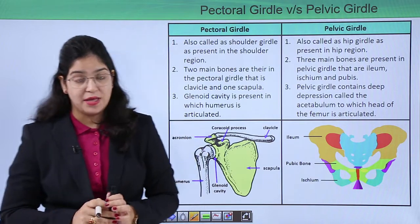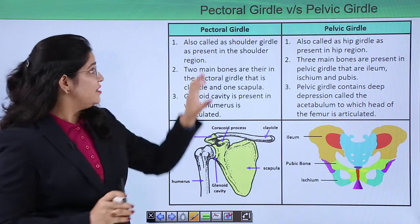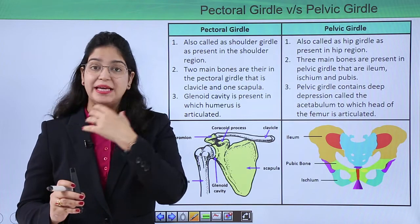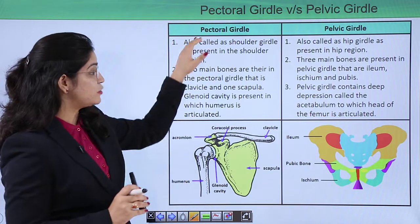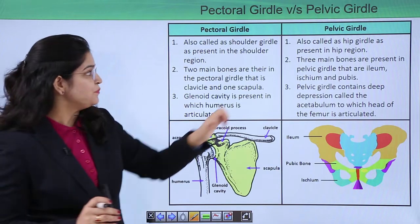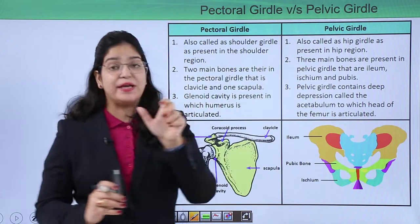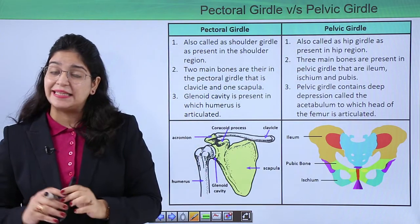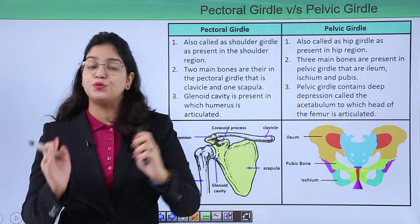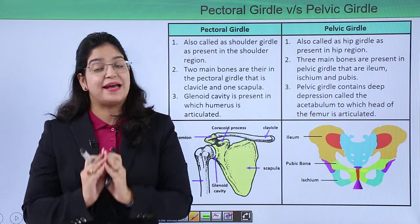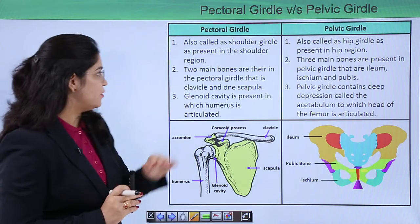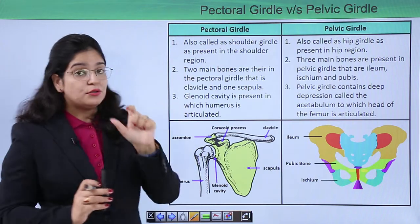Because the pectoral girdle connects the arm to the axial skeleton, it is also called the shoulder girdle. And because the pelvic girdle connects the lower limb to the axial skeleton through the hip region, it is called the hip girdle.